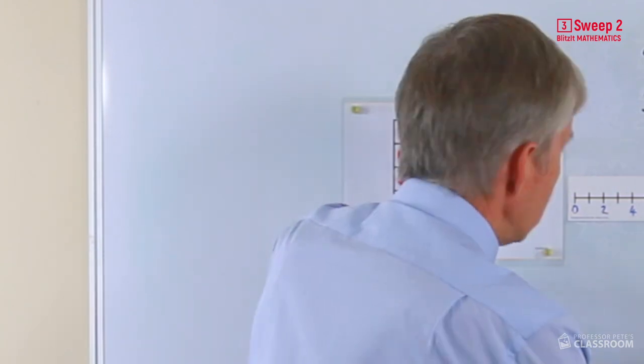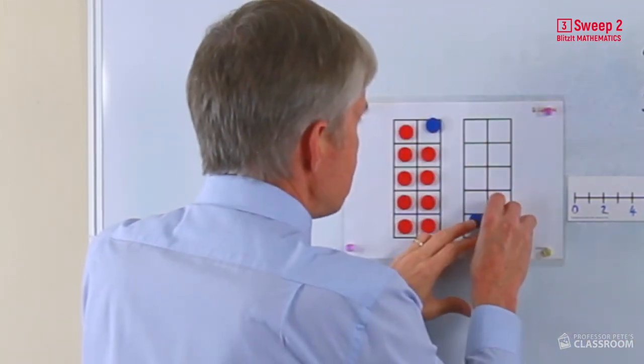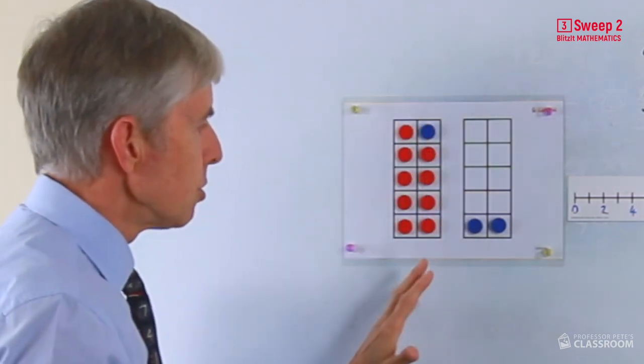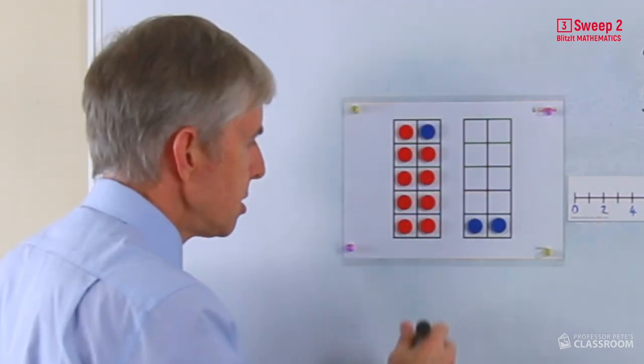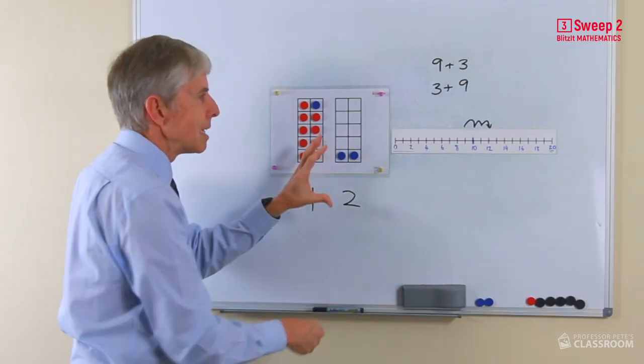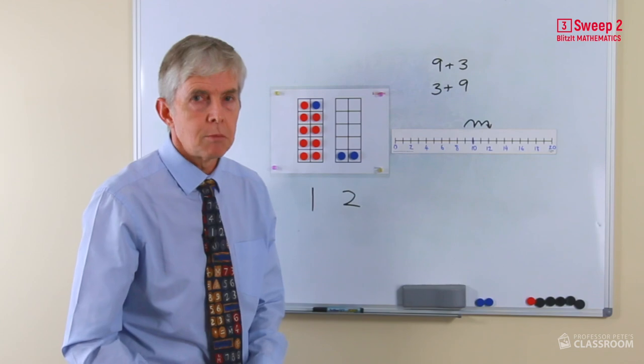Students aren't going to find that difficult. And this introduces the idea of place value that a full set of 10. I should probably write it will be one group of 10 and then two others. There's the 12. So that links the place value to that particular number fact.